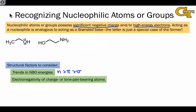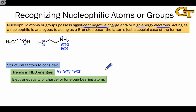Electronegativity also plays a huge role. Say, for example, we had narrowed down the nucleophilic atoms in a molecule to oxygen and nitrogen, noticing the lone pairs on both, and we need to decide which is more nucleophilic. Considering that nitrogen is less electronegative than oxygen, this suggests that it's more likely to donate its lone pair — oxygen holds onto that lone pair more tightly. So the more likely nucleophile is nitrogen because it's less electronegative than oxygen.